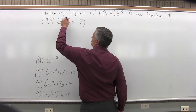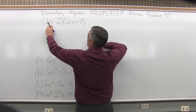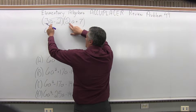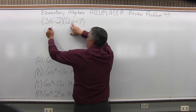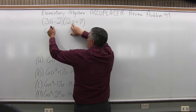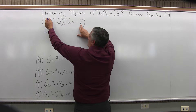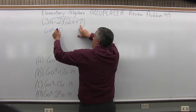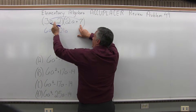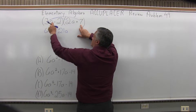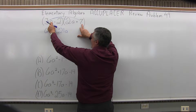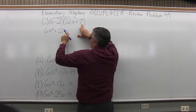We start with 3a times 2a. The 3 times 2 gives me a 6, and a times a will be a squared. Then 3a times 7 will be 21a — the 3 times 7 makes the 21, it's positive. There's an a in the first factor, the 3a, but no a with the 7, so it's just 21a.